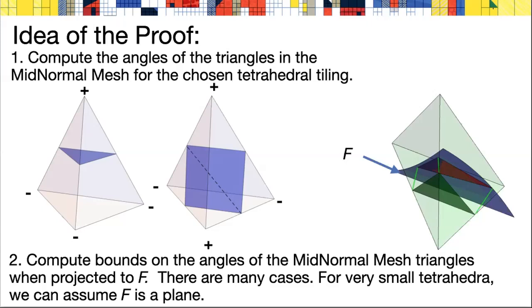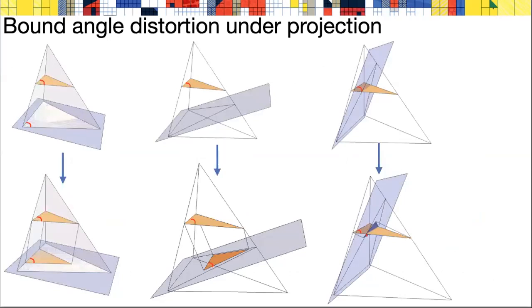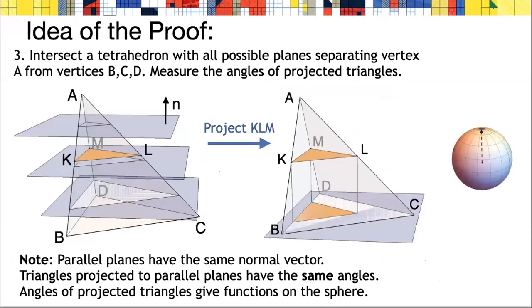Now when we project those triangles onto the surface to get the GradNormal triangles, we have to measure how much those angles can be distorted by the projection. Here we see a brown triangle, which is part of the midnormal mesh. We see various types of projections onto surfaces that cross that tetrahedra. Because we're looking at the limiting resolution, we can assume that the surface we're projecting onto is a plane. But there's still many ways that a plane can cross a tetrahedra, and each one can lead to a different angle distortion.